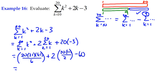That gives me 2,870 plus 420 minus 60, which gives me a total value of 3,230. Just a bit of number crunching there.